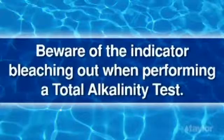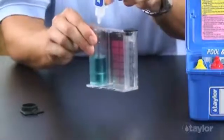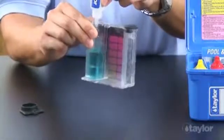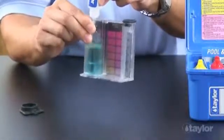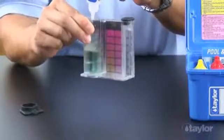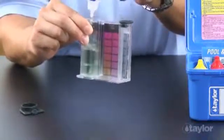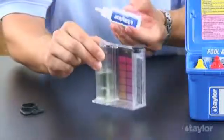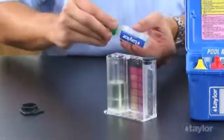Beware of the indicator bleaching out when performing a total alkalinity test. The most common interference is caused by a high level of chlorine or bromine. If excessive chlorine or bromine is present in the sample, one of the two organic dyes used in the total alkalinity indicator bleaches out. When this happens, the reaction's color changes from blue to yellow instead of green to red.